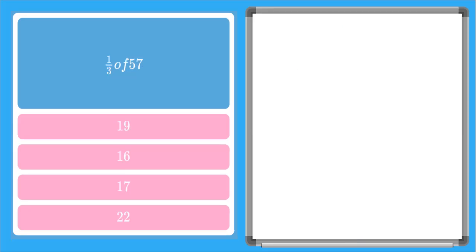Let's do one more together. And here this one, we're finding a fraction one-third of the set fifty-seven. So one-third of fifty-seven.